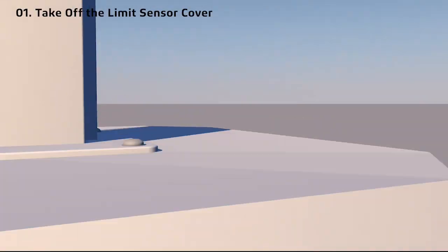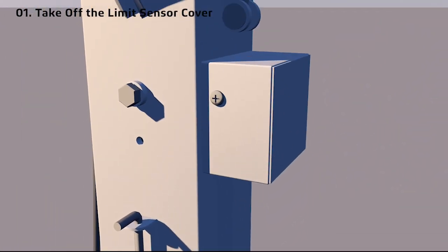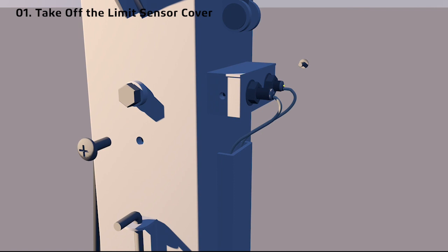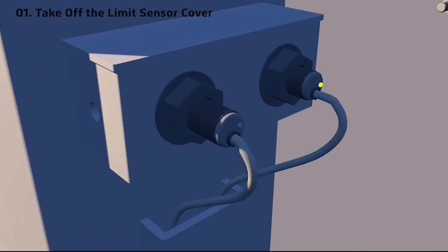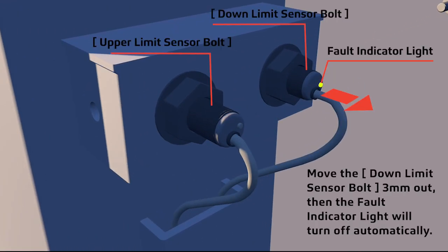In order to fix, remove the enclosure compartment protecting the upper limit sensor bolt and the down limit sensor bolt. These are the sensor bolts that operate the lift function.